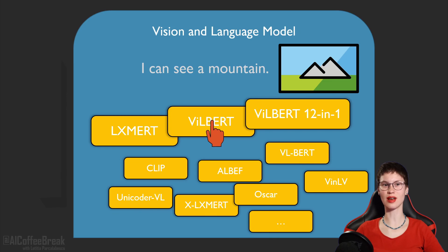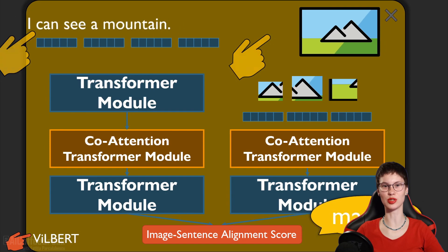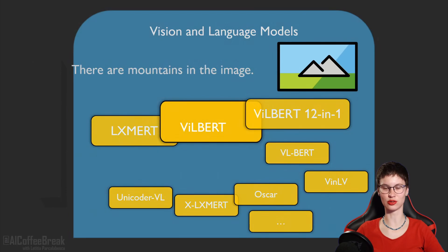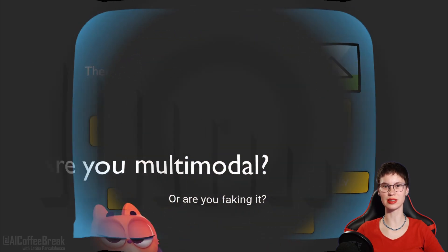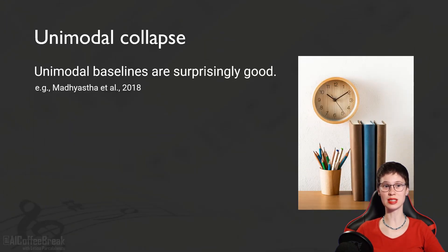Fundamentally, these models are transformers that work on text and image input. They are trained, for example, with the image-sentence alignment objective to say whether a pair of text and images match or mismatch. There is reason to believe that not all modalities matter for these models equally, since they can suffer from unimodal collapse — meaning that even if trained multimodally, a model can exploit one modality far more than the other. Indeed, we observe that on multimodal tasks, unimodal baselines can be close in accuracy to multimodal models.